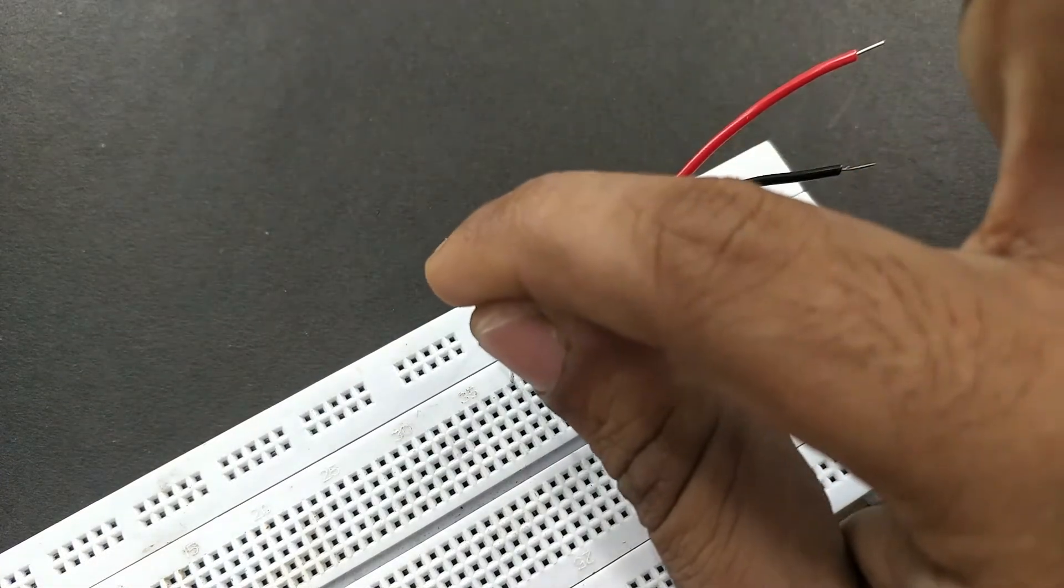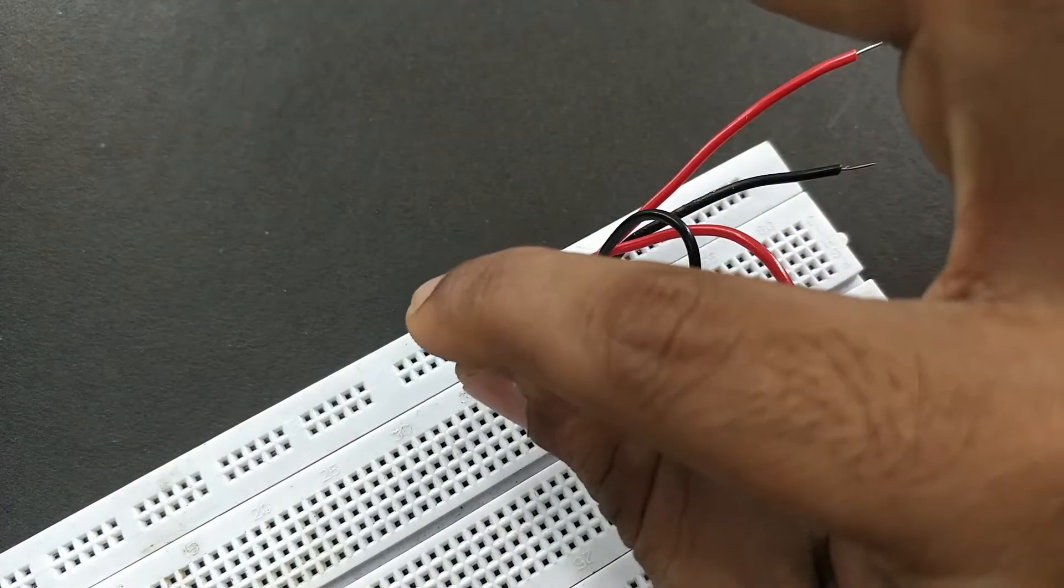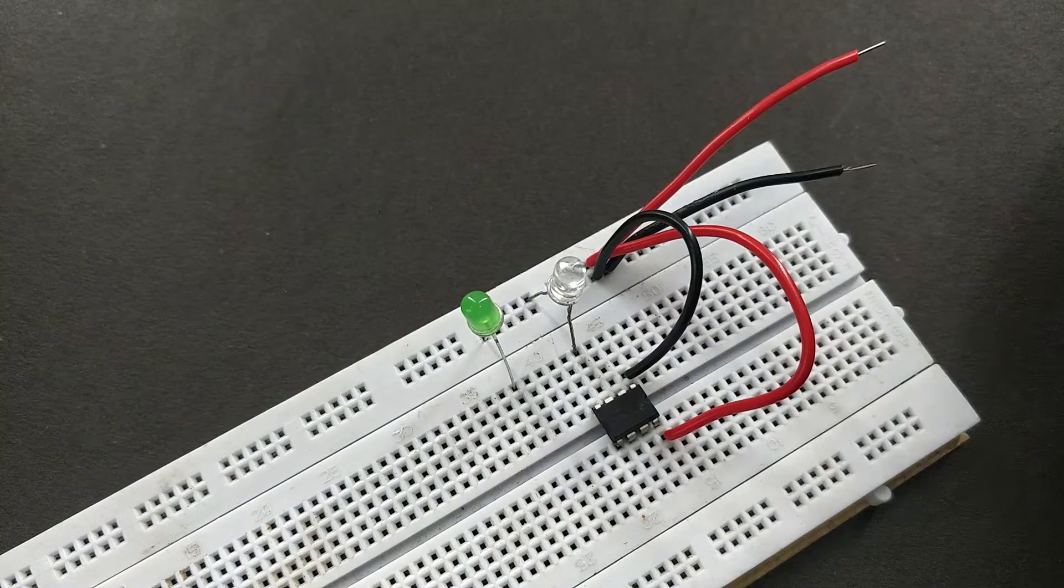Now take the second LED and connect its negative terminal to the negative row and its positive terminal to another random column on the breadboard.